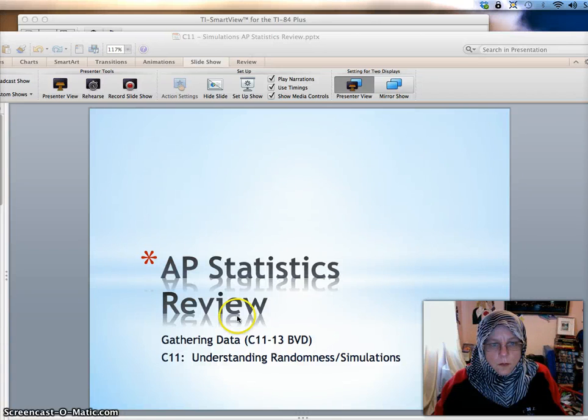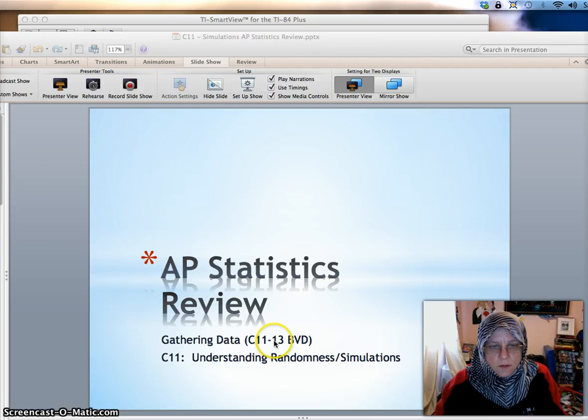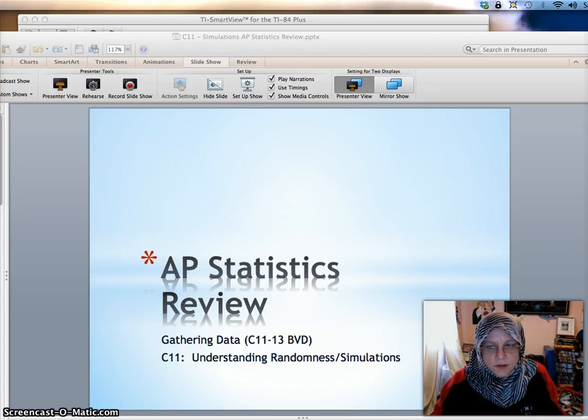Welcome to Chapter 11 AP Statistics Review. Chapter 11 in Bach, Feldman, DeVoe is about understanding randomness and simulations. And so that's what we're going to cover in today's show.